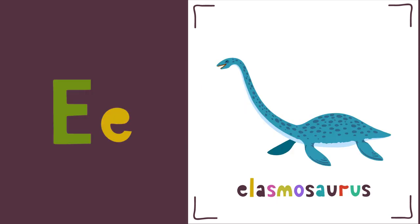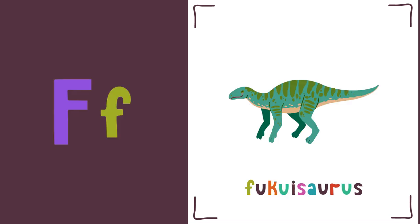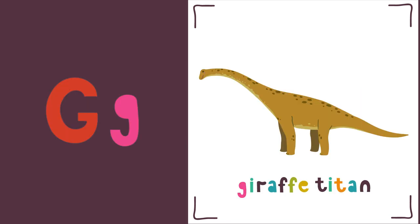E is for Elasmosaurus. E, Elasmosaurus. F is for Fukuasaurus. F, Fukuasaurus.